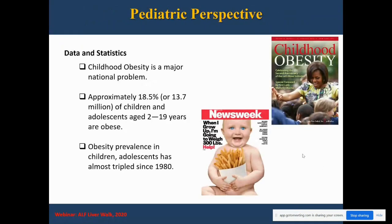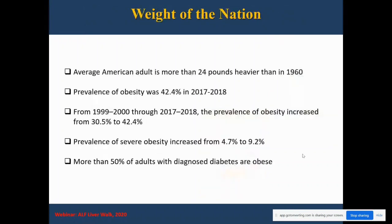Childhood obesity is a major national problem. Approximately 18.5%, or about 13.7 million children between 2 and 19 years of age, are obese. Obesity prevalence in children and adolescents has almost tripled since the 1980s. An average American adult is actually more than 24 pounds heavier than in the 1960s.